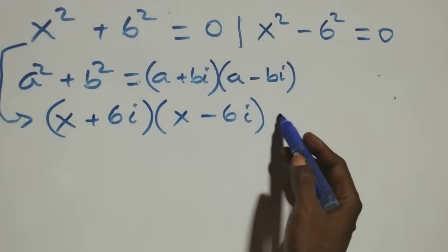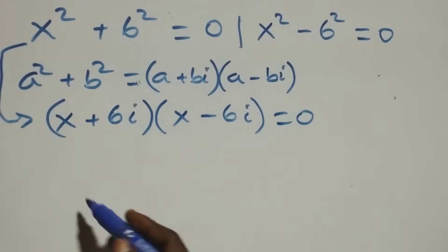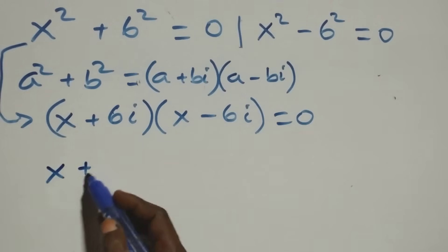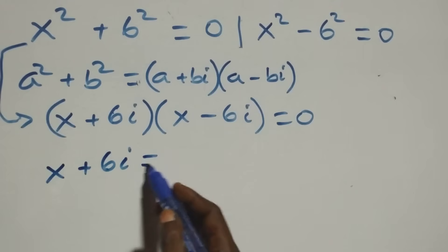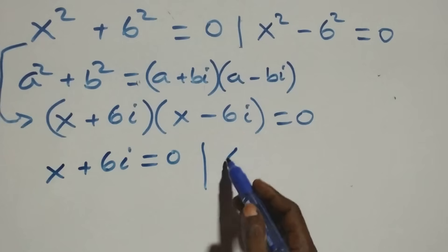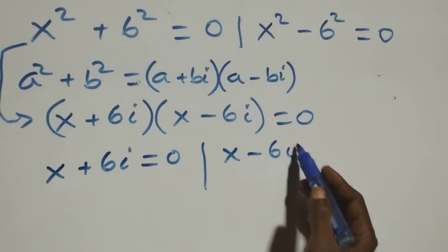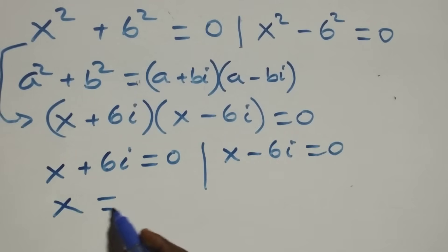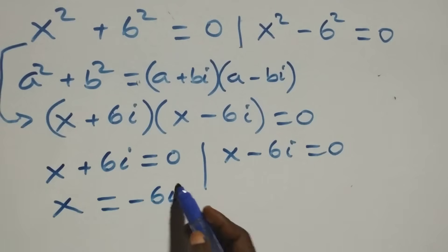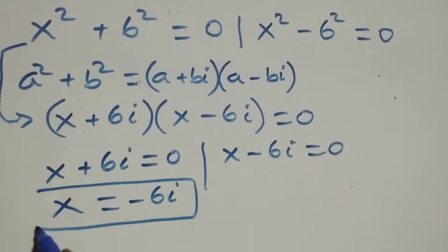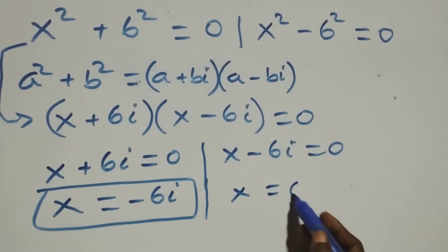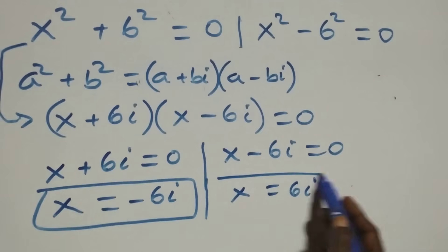This gives us two possible sub-cases: x + 6i = 0 or x minus 6i = 0. From the first, x equals minus 6i, which is a complex solution. From the second, x equals 6i, which is also a complex solution.